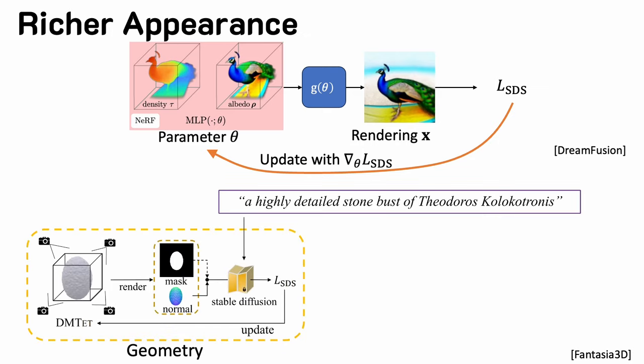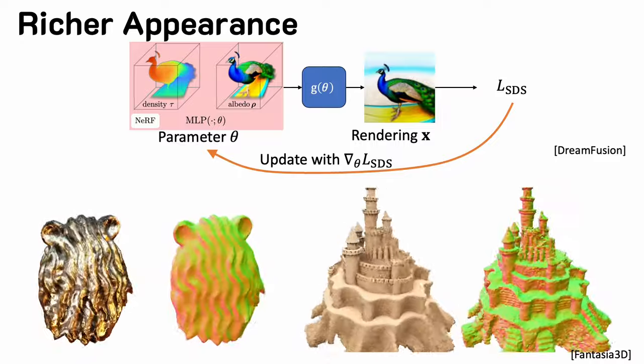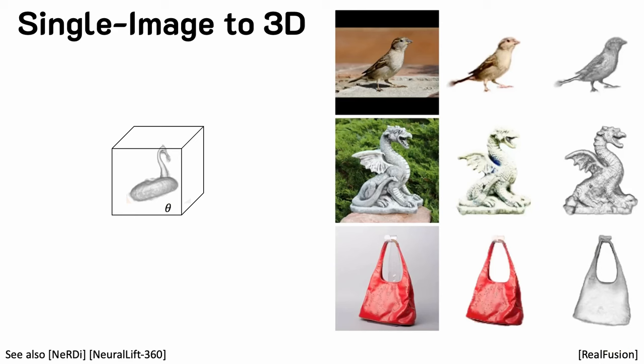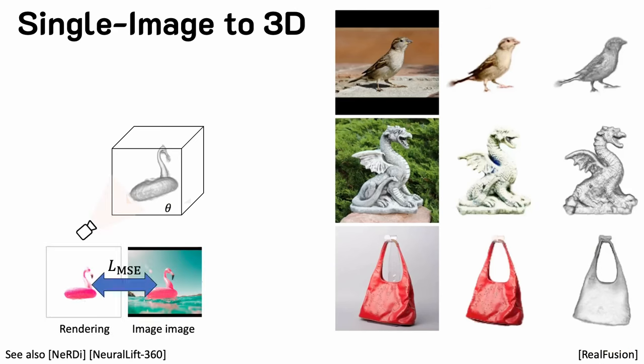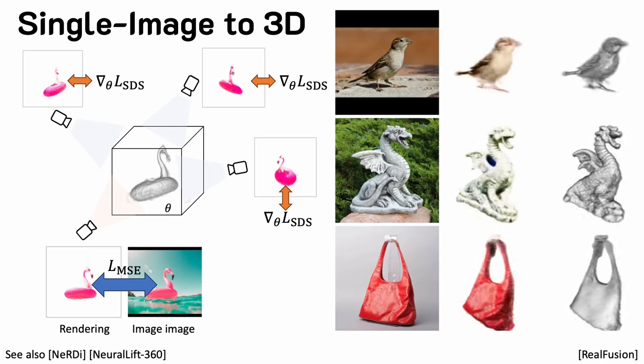Instead of optimizing the texture only, we can optimize the surface material for photorealistic rendering. How can we enable single-image 3D reconstruction? We first add a reconstruction loss between a rendered image and an input image. We then render a 3D representation from novel viewpoints and perform SDS updates.